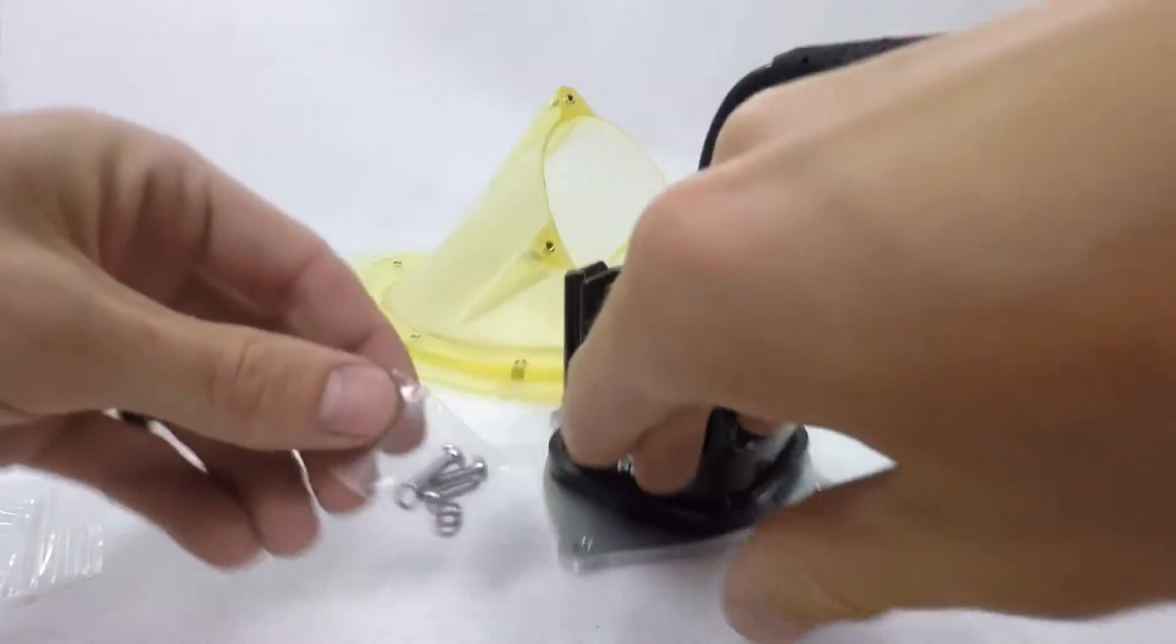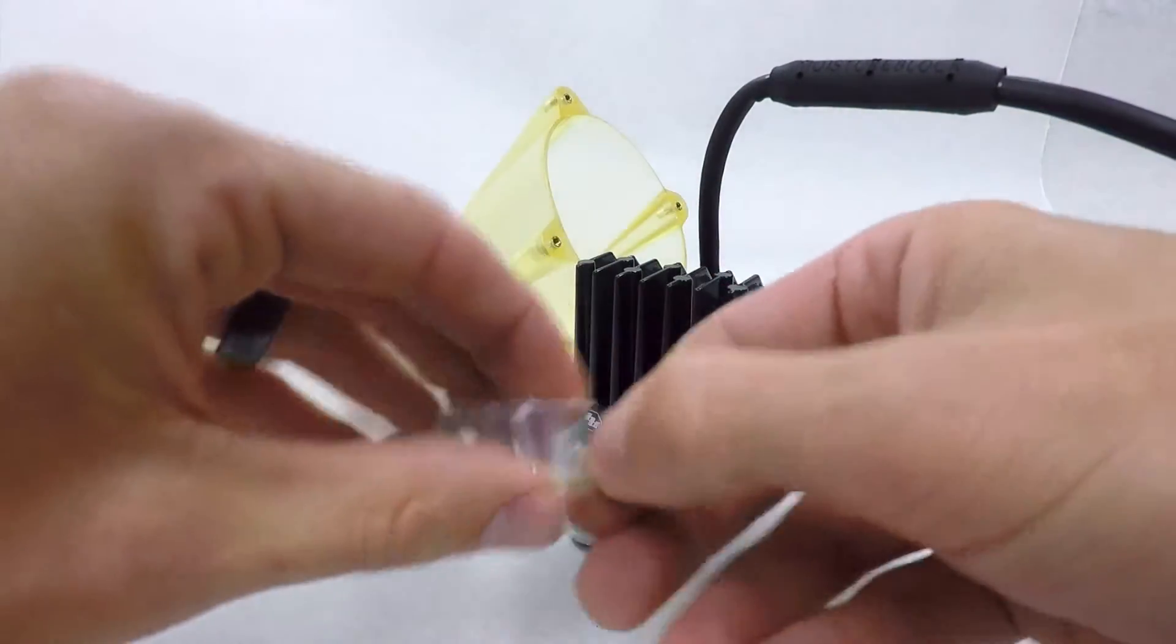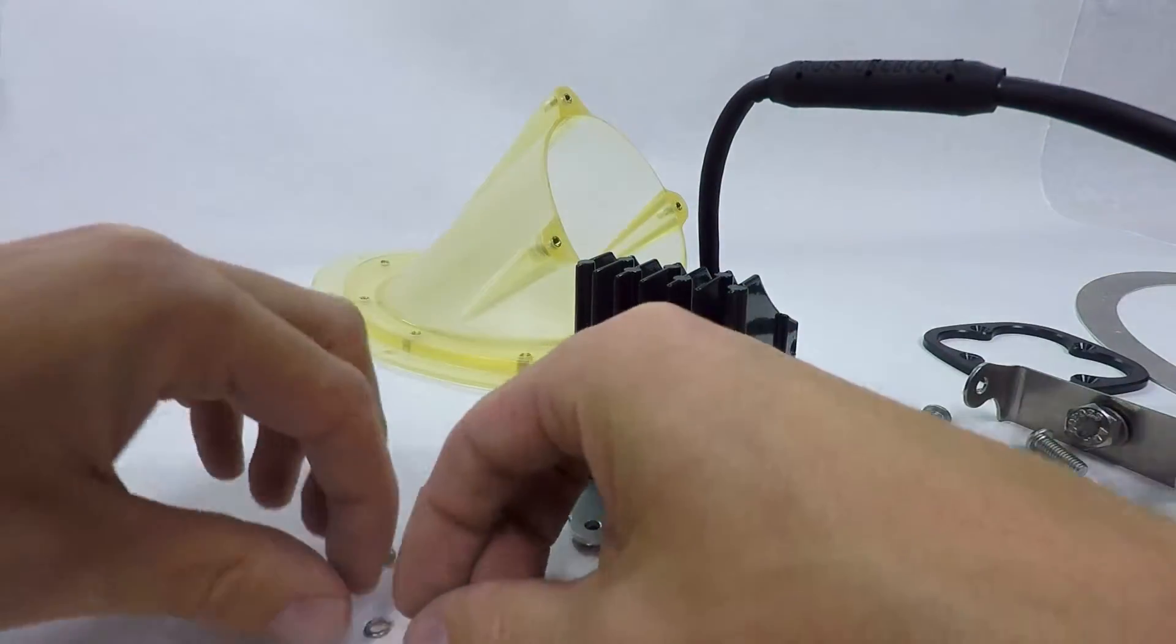You'll use the three small pan head screws with lock washers.